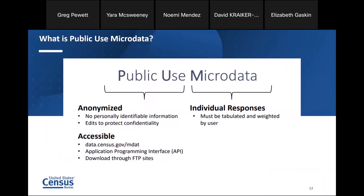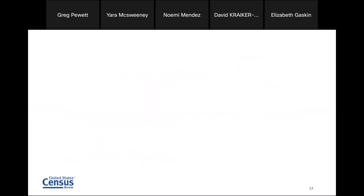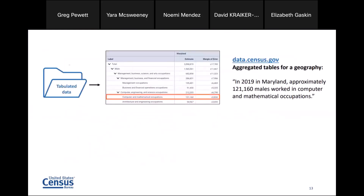What is public use microdata? Public use microdata is anonymized — there's no personally identifiable information — and it's edited to protect confidentiality. These are individual responses that are tabulated and then weighted. It's accessible through the MDAT tool, our application programming interface (API), and you can also download it through FTP sites. For those of you who are data.census.gov users, you're working with already tabulated data. For instance, this table shows that in 2019 in Maryland, there were approximately 121,160 males who worked in computer and mathematical occupations.